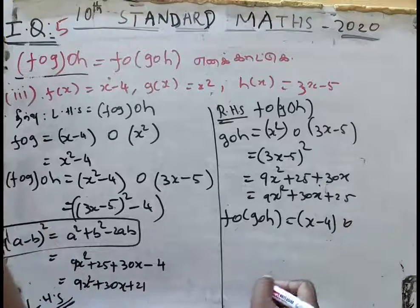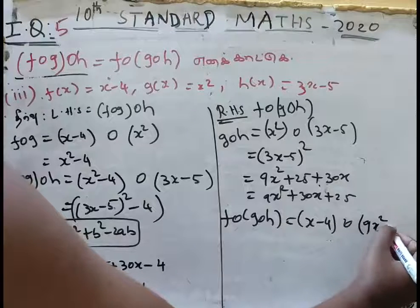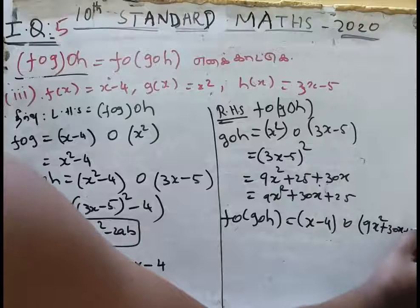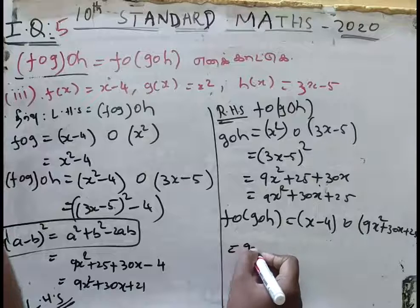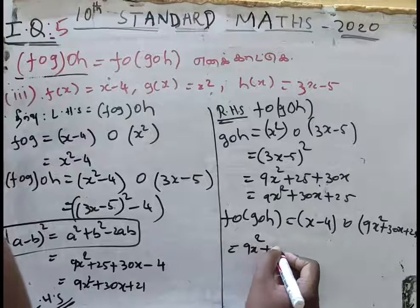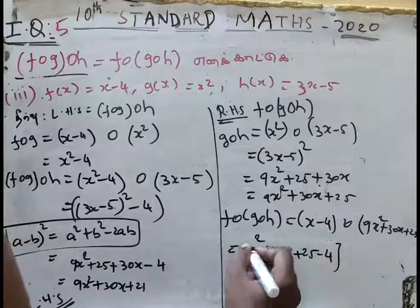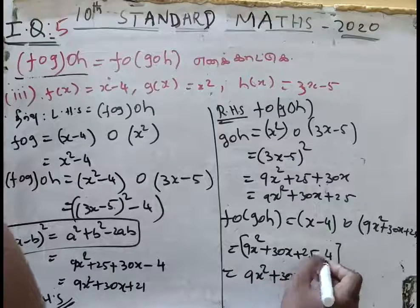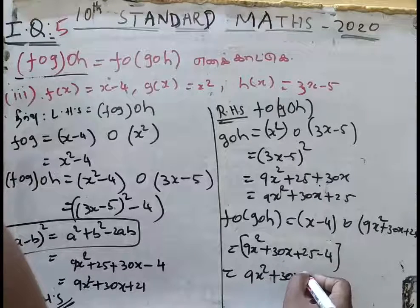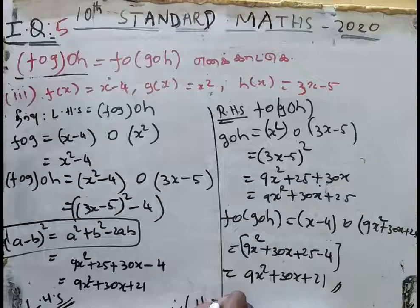Now looking at g: we get 9x squared plus 30x plus 25, which is minus 4 — the right value. So we get 9x squared plus 30x plus 25 minus 4, which equals 9x squared plus 30x plus 21. Therefore LHS is equal to RHS.